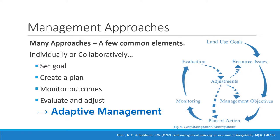These different approaches to land management all have common elements — a flow of activities that happen whether you're talking about collaborative resource management, individual management, or planning. Basically four things have to happen: first, someone has to set a goal, either the individual who owns the land or a group managing it. Second, you have to create a plan — decide what to do to meet your goal. Third, you have to monitor to see if you're getting there, monitoring outcomes. And finally, you have to adjust and re-plan, evaluating how well you're doing and making adjustments.